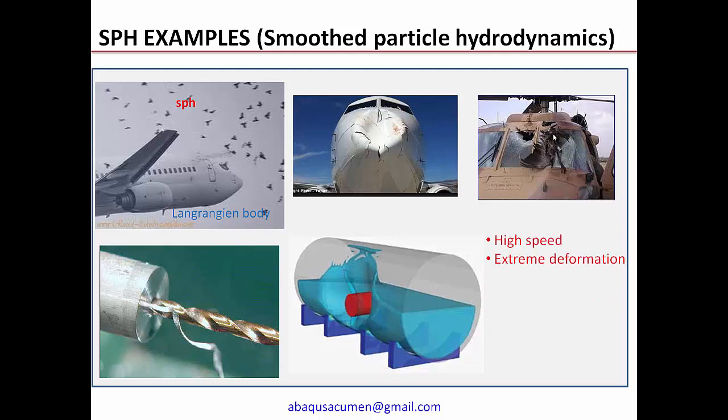When should we use the SPH approach? When you see a very high-speed event — for example, the average speed of an aircraft is around 700 km/h. When a bird is hit, it contains 72% water, so the effective way to model is the bird in SPH method and the aircraft body in the Lagrangian approach. Once we see the impact, there is severe deformation where the regular FEA Lagrangian method fails — that is the point where we think of using the SPH modeling approach.